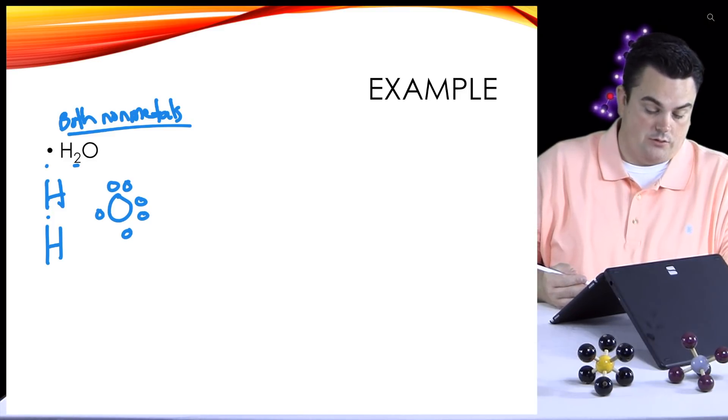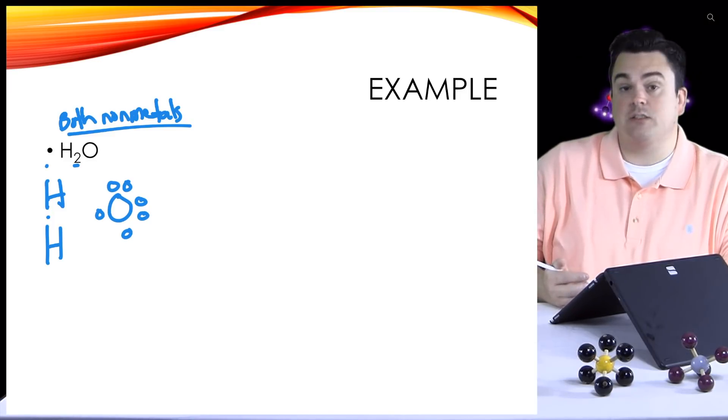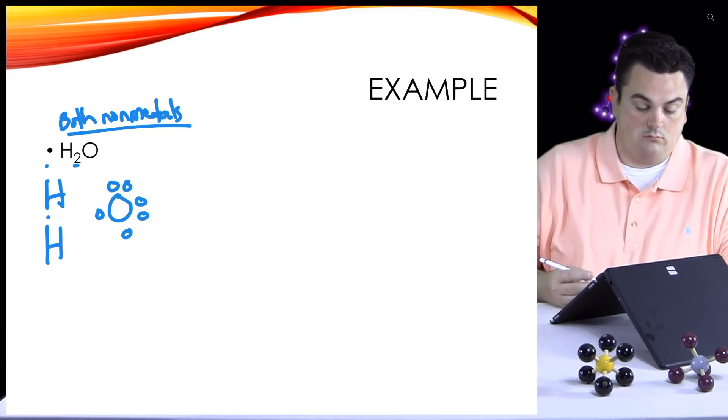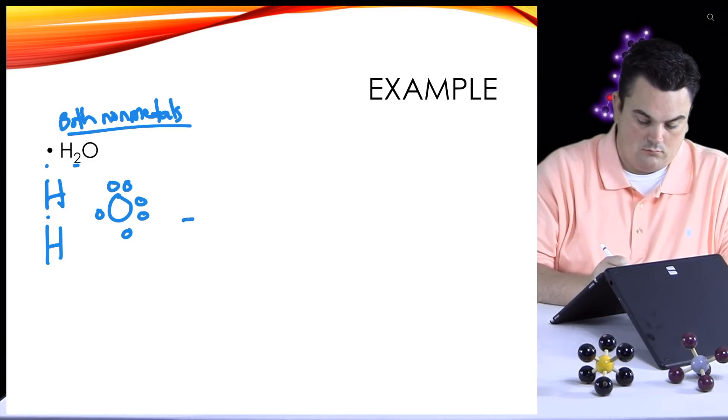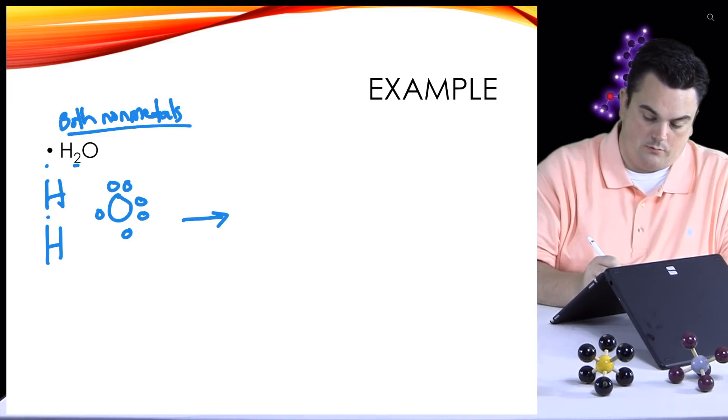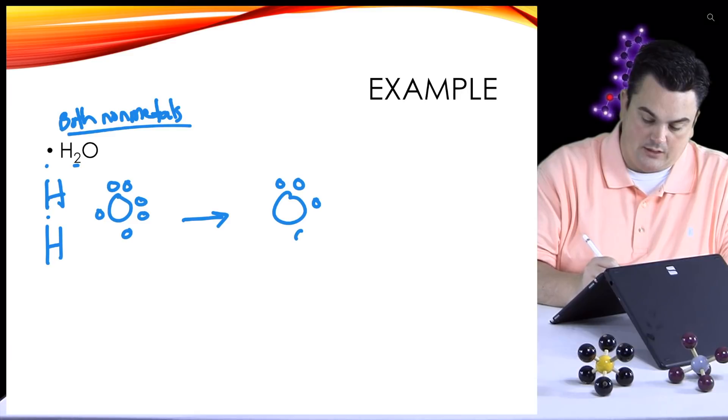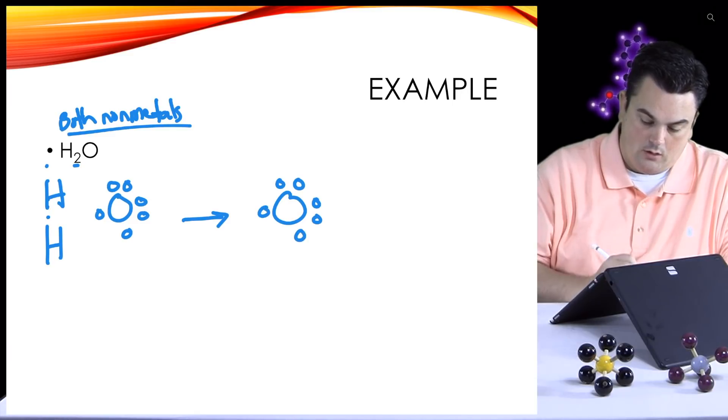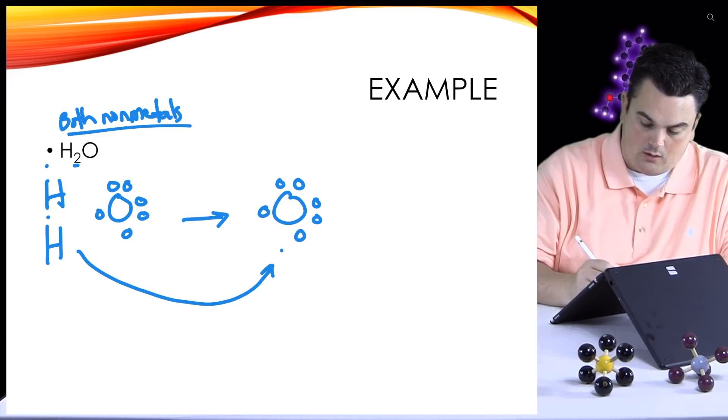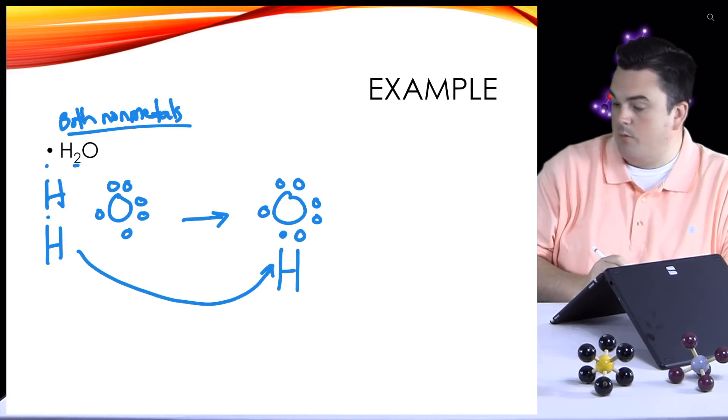Okay, well oxygen's not one of the exceptions, so it follows the octet rule, so it needs eight. So how many more electrons does it need then? It needs two, it's got six. So you can kind of see this is mutually beneficial. Each hydrogen needs one more, oxygen needs two total more. So we're going to kind of link them up, pair up the electrons to make our covalent bonds.